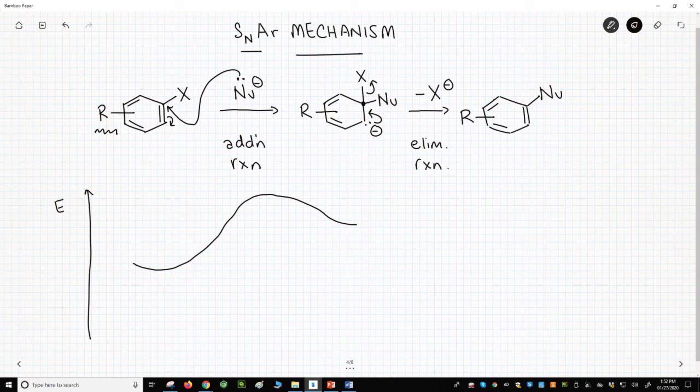This intermediate actually has a name. It's called the Meisenheimer complex. The intermediate then reacts very quickly to form our stable product.